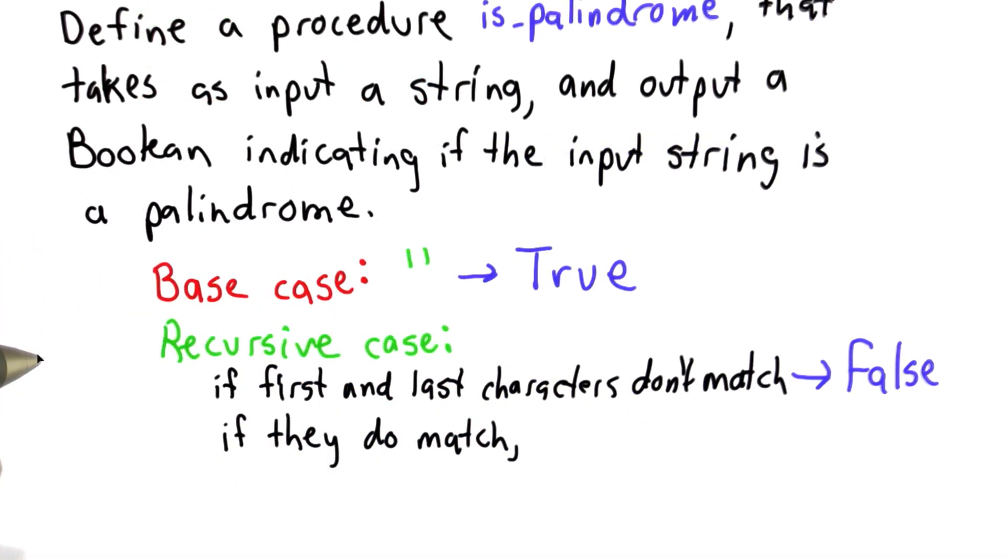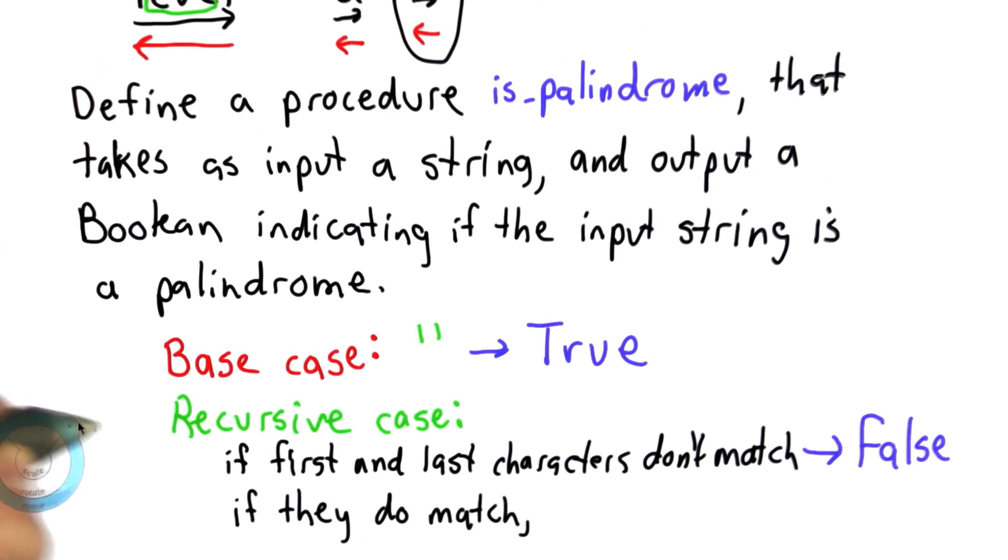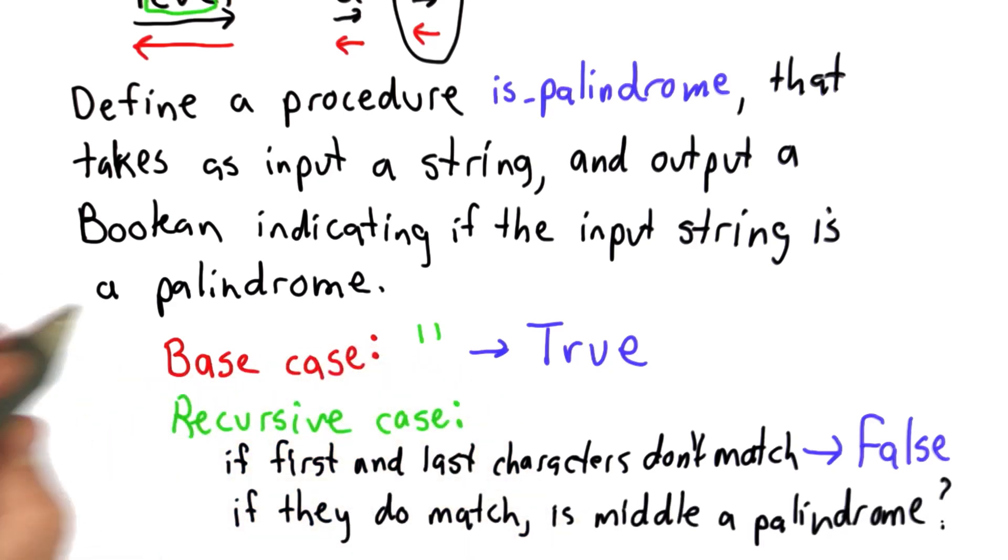and that means we need to check the middle of the string if that's a palindrome. And because we're able to define this recursively, remember that we're defining the procedure is_palindrome, but we can do this test assuming that we've already defined it.